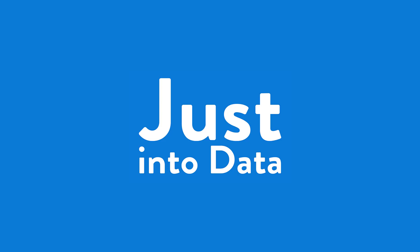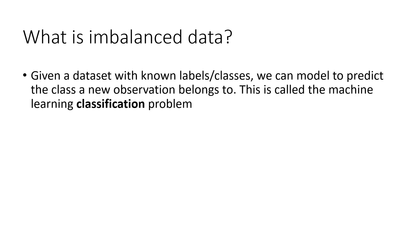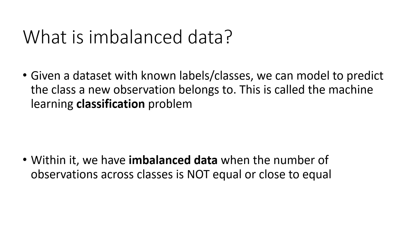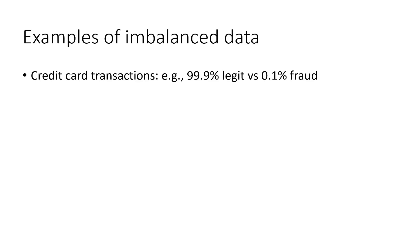So let's start from the definition. What is imbalanced data in machine learning? Given a dataset with known classes, we can model to predict the class a new observation belongs to. This is called the machine learning classification problem. Imbalanced data occurs when the classes of the dataset are distributed unequally, so when the number of observations across classes is not even close to equal. It's actually quite common. An extreme example could be a dataset of credit card transactions — there could be 99.9% of legitimate transactions and only 0.1% of fraudulent transactions.